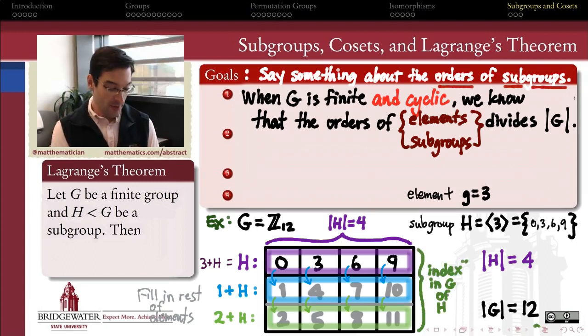These rows, the green and blue rows, are called cosets of the subgroup H. And the number of them that there are in this group, in this case it's 3, is called the index in G of the subgroup H. It's basically, how many copies of this subgroup do I need to partition my entire group?